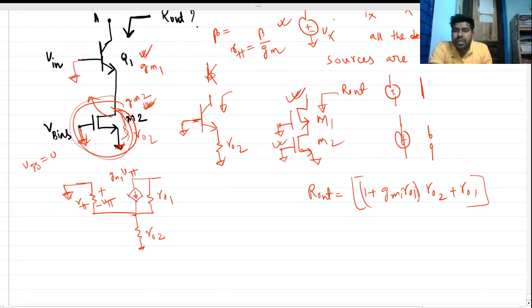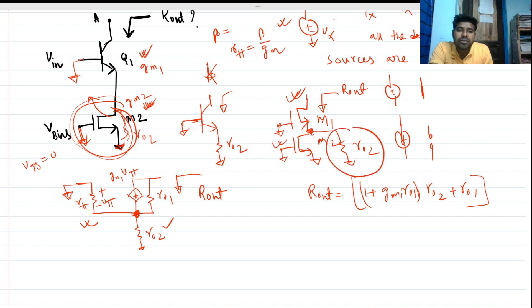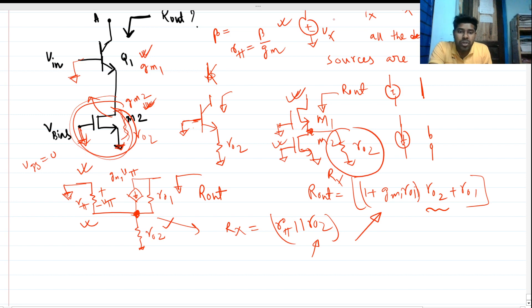Looking from this node, which is our R_out node, we can see there are two branches: one is ro2 and another is r_pi. So the impedance at this node — let's call it R_x — will be nothing but r_pi in parallel with ro2. Basically the ro2 in the standard expression is replaced by this combined expression because r_pi is present for this BJT.